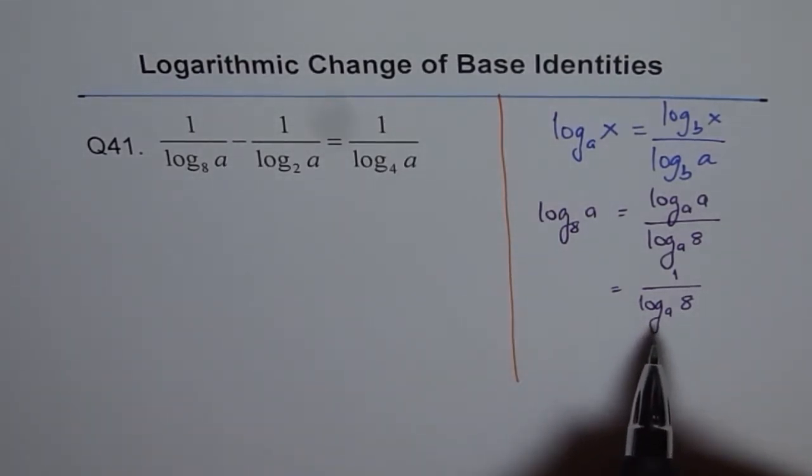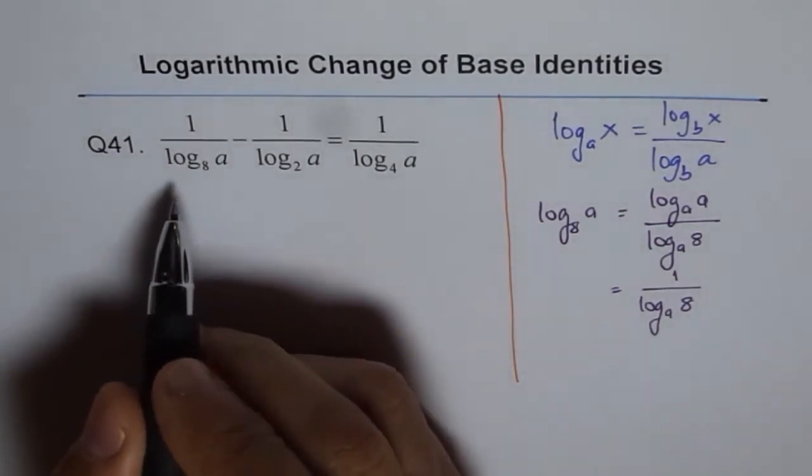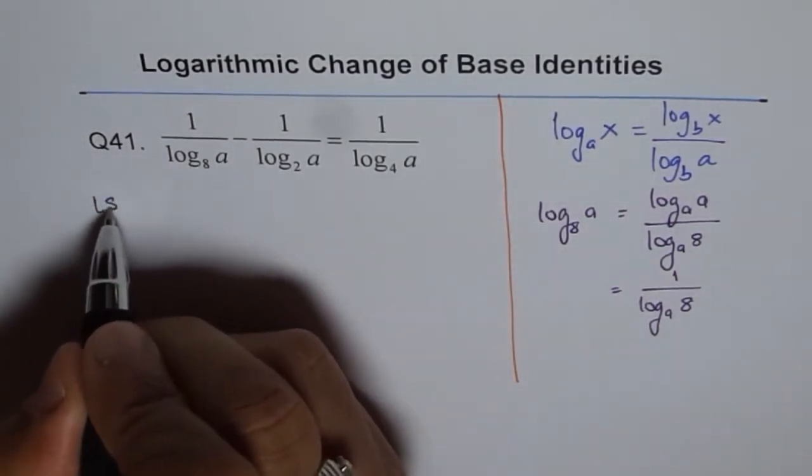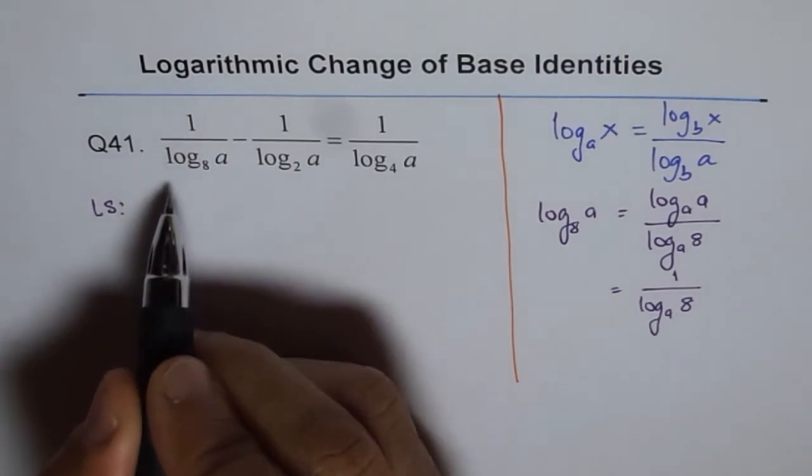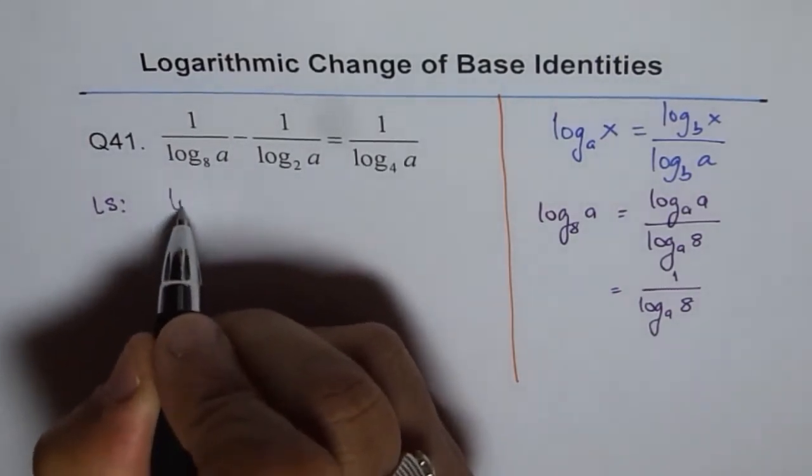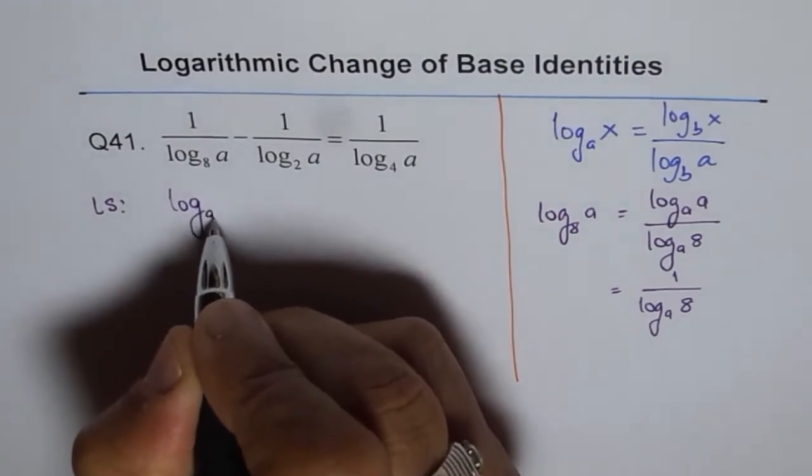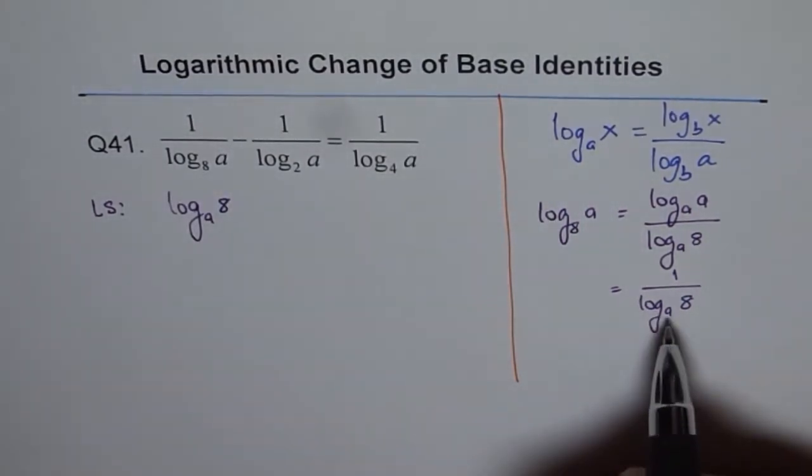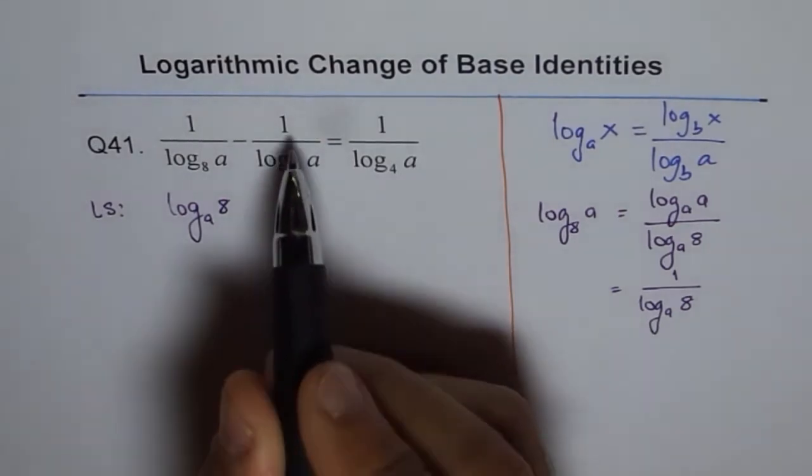That's what we are going to do here. We'll start with the left side and we can write 1 over log base 8 of a as log base a of 8. Similarly, applying this property, we can write 1 over log base 2 of a as minus log base a of 2.